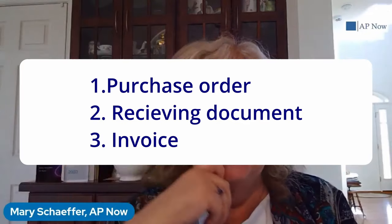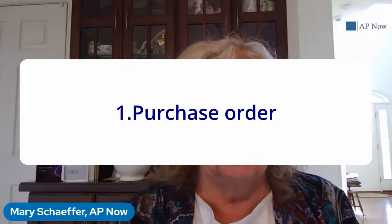The three-way match involves three documents: the purchase order, the receiving document, and the invoice. The purchase order — abbreviated PO — is the document your purchasing department prepares and sends to the supplier placing the order. It delineates what they want to order, the price, and terms and conditions — setting forth the terms of the transaction as far as your organization is concerned. If the supplier doesn't agree with anything on it, like the price, they should go back and forth with purchasing and the purchase order should be updated to reflect whatever they agree on.